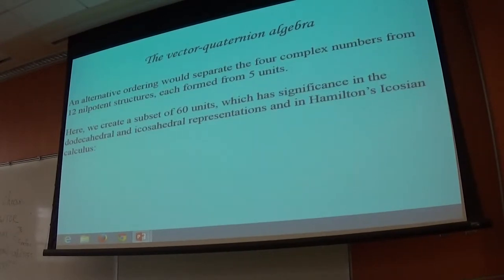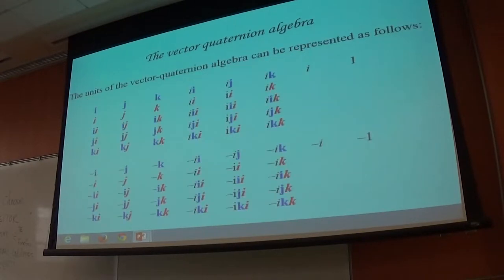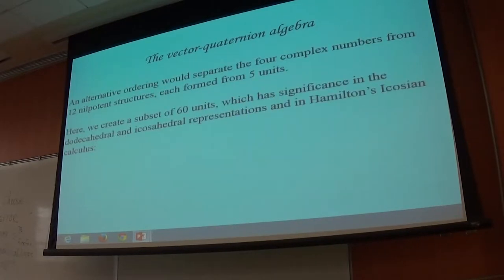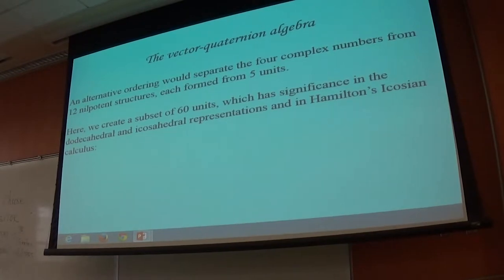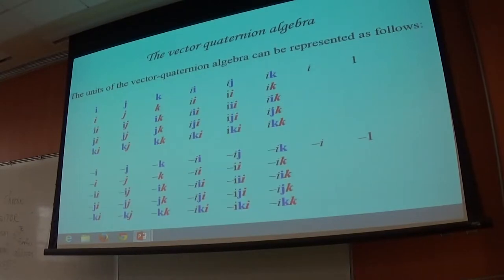We could order this algebra in different ways — we could construct that table in many different ways, and each tells you a different story. One way we're particularly interested in is to separate the four complex numbers from 12 nilpotent structures.